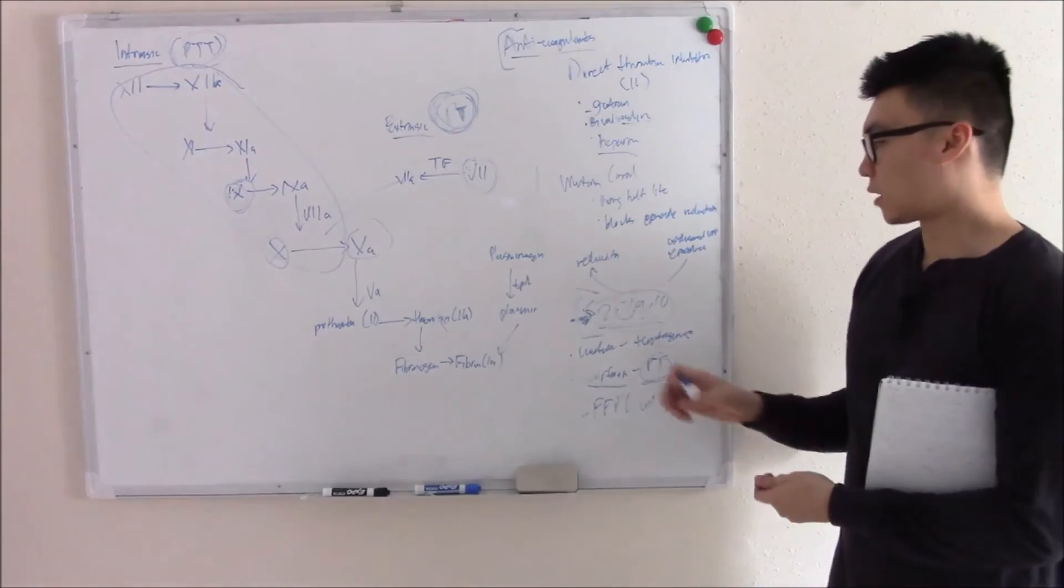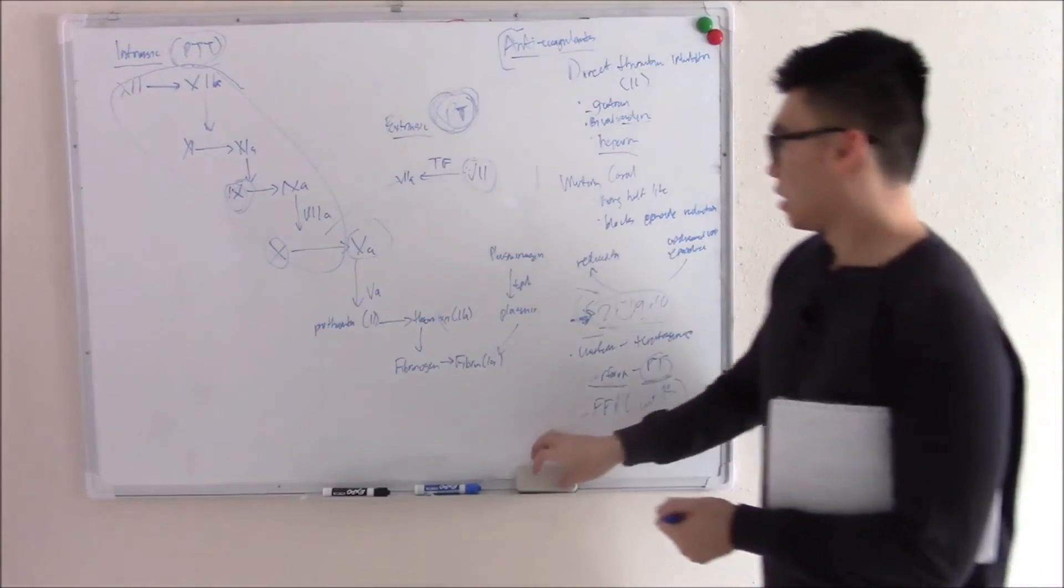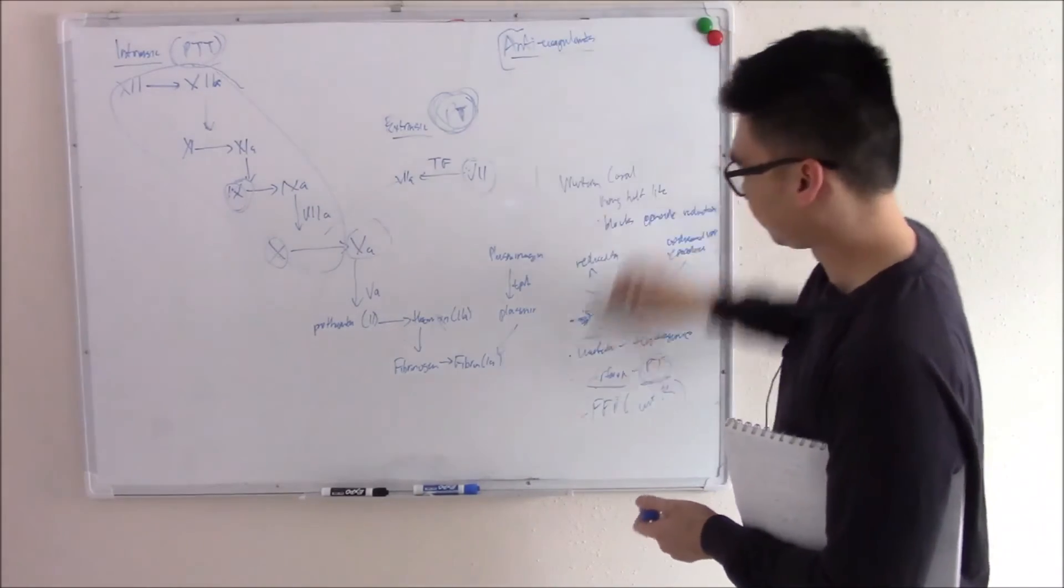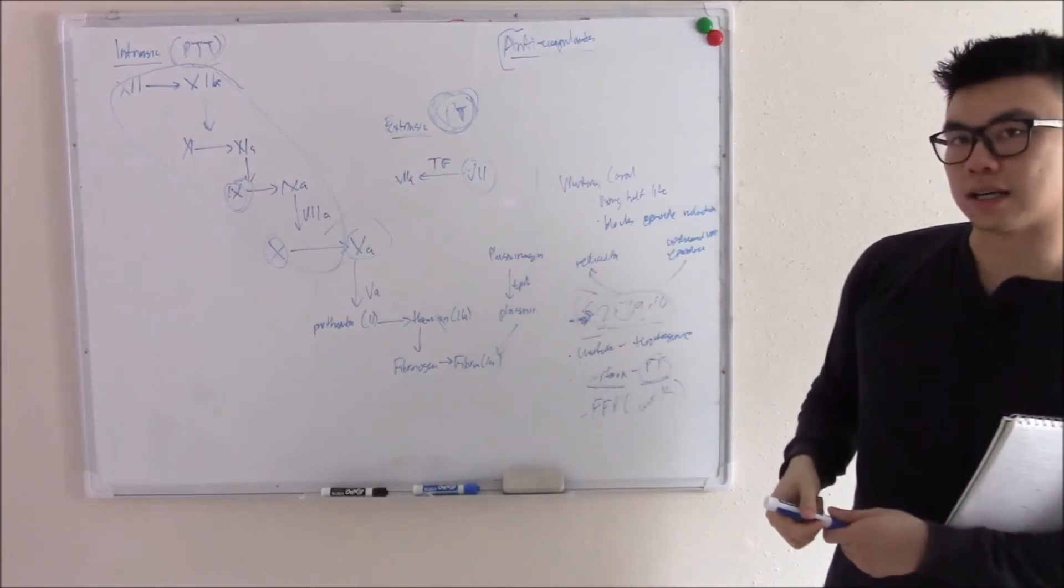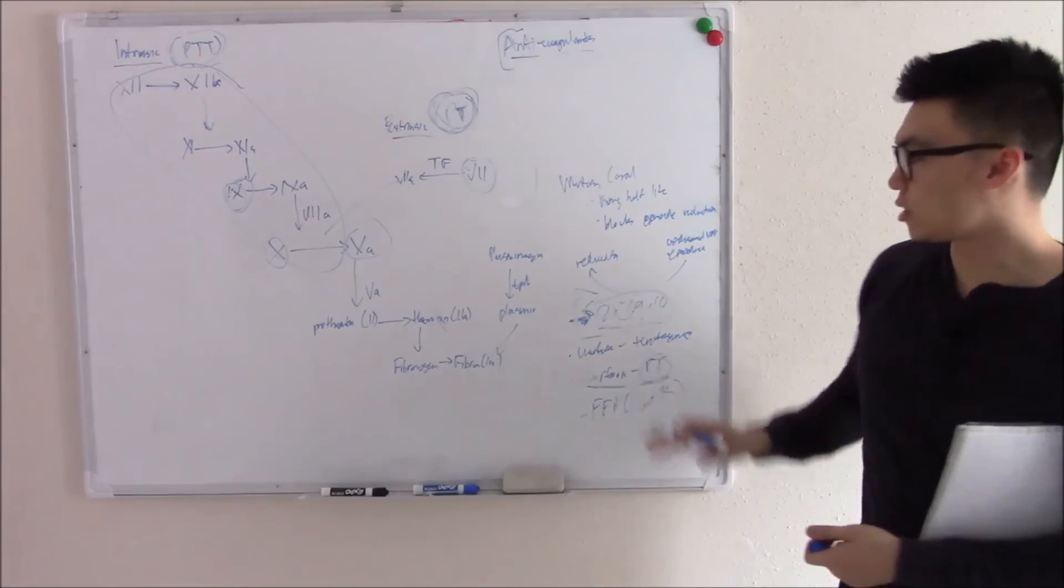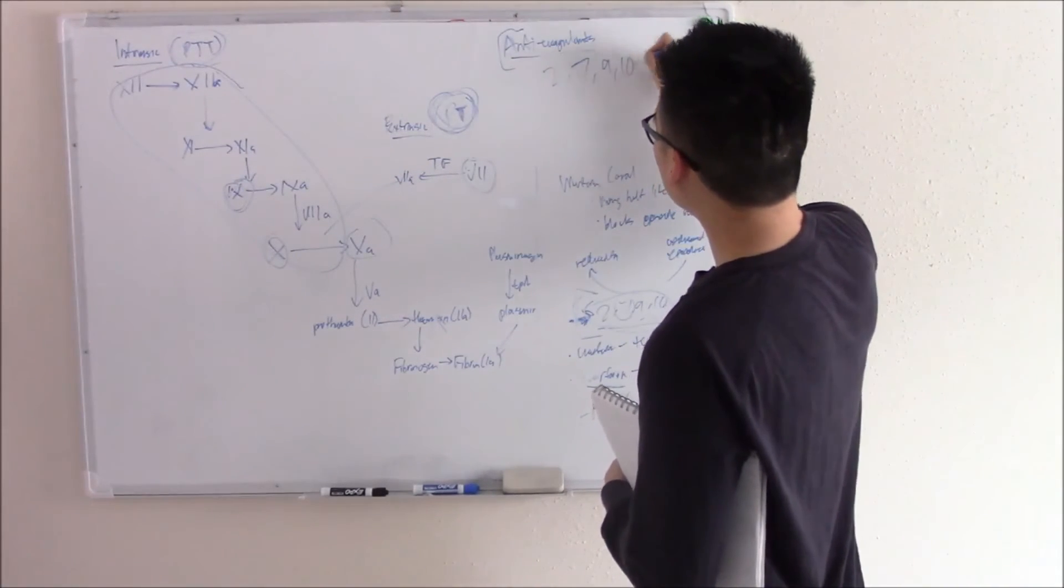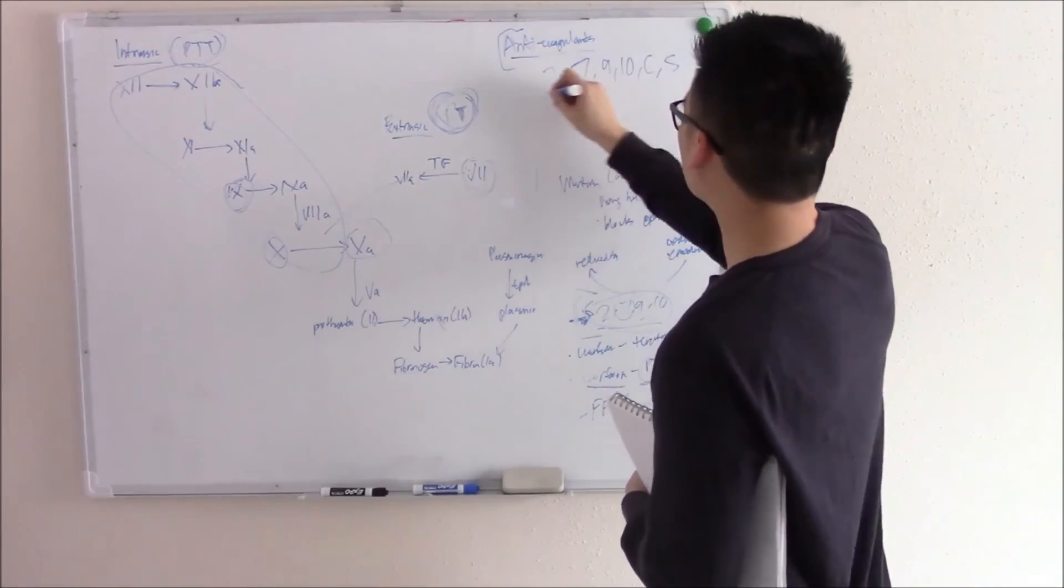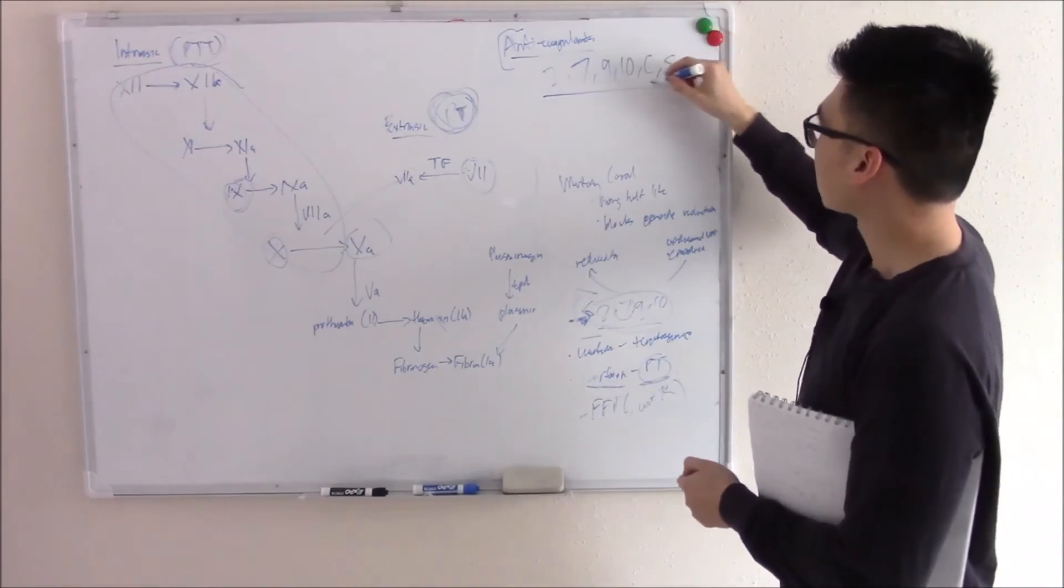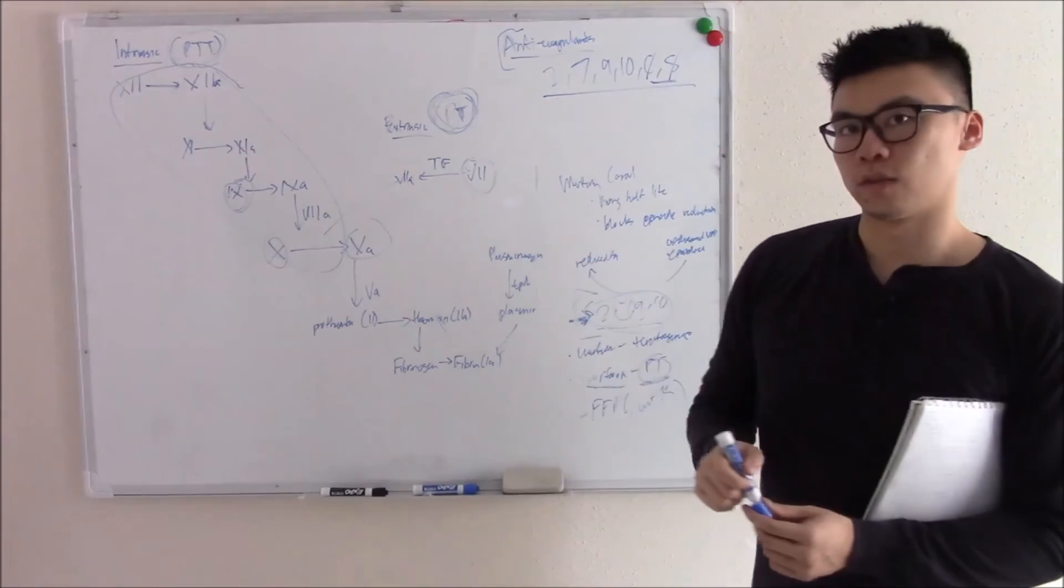So that was warfarin. Now you're probably thinking I talked about 2, 7, 9, and 10 but I skipped C and S. Why did I do that? Well I did that on purpose because there's a very big side effect of giving warfarin. Warfarin blocks epoxide reductase right? That makes 2, 7, 9, 10 and C and S. And I didn't talk about it here because I wanted to talk about it when we're talking about the side effect of warfarin. When you block all of these, C and S actually has the shortest half-life so that gets blocked first.